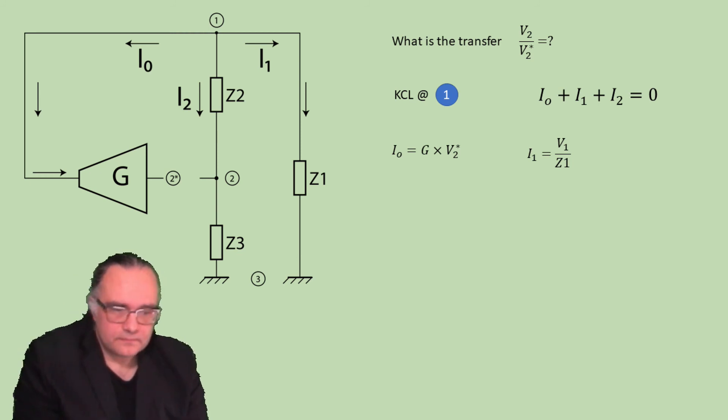I1 is the node that you have, the potential that you have at node 1 divided by the impedance that is to ground which is Z1. So I1 is V1 divided by Z1. And I2 is the current that flows through the impedance Z3. Hence we can express it as I2 divided by Z3.